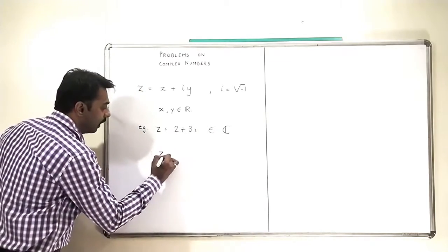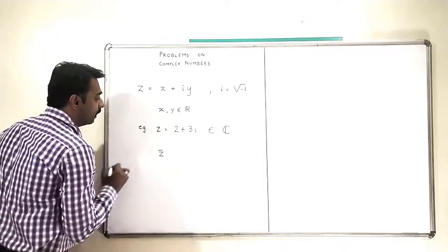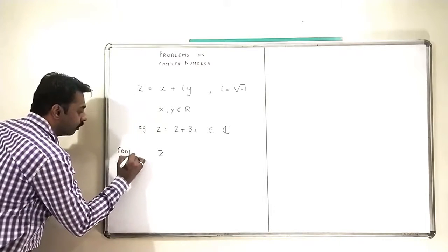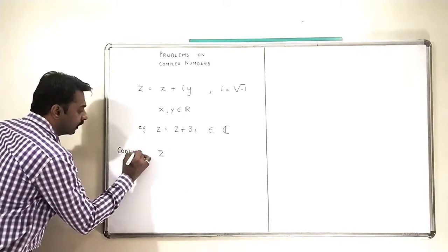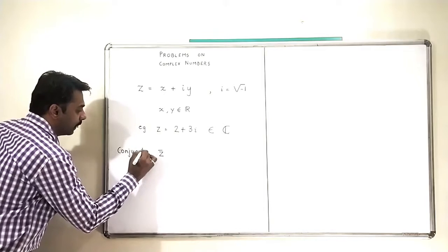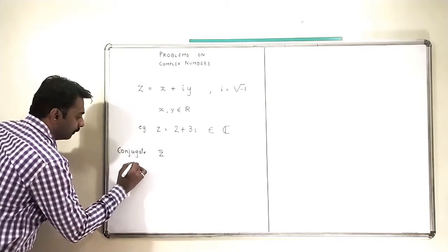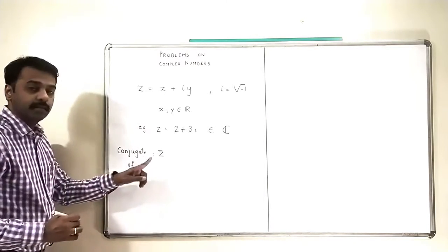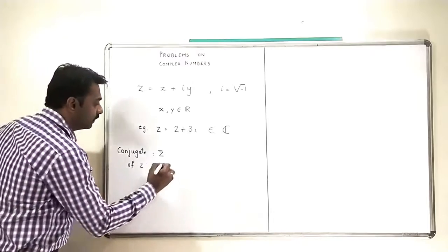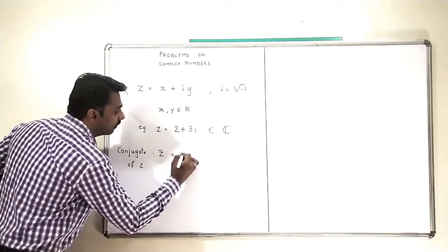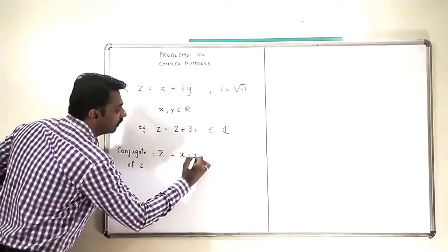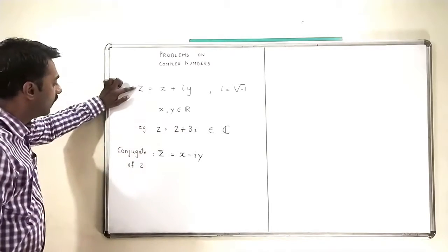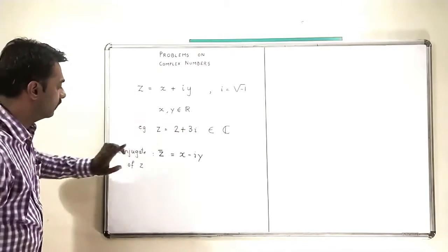Now, what is Z bar? Z bar is the conjugate of Z. So the conjugate of Z is denoted by Z bar, which is given by X minus iY. So this is Z, this is Z bar.